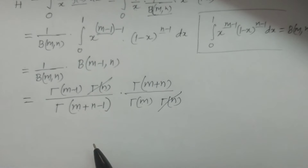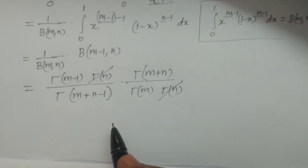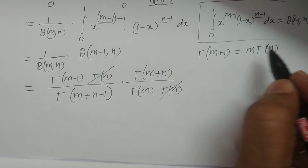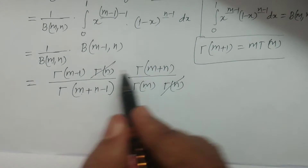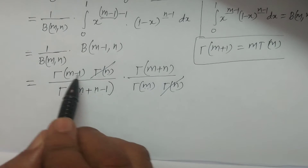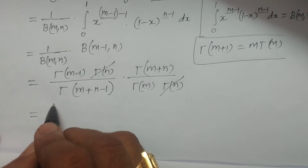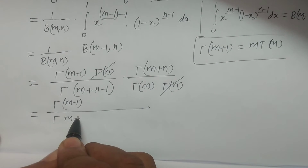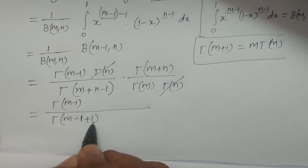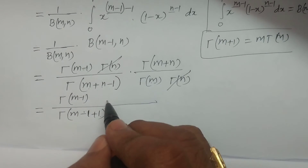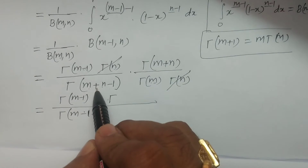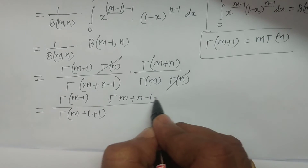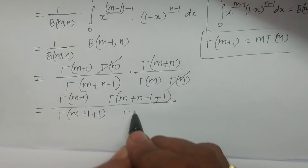We identify the highest factors and expand them using the formula gamma(m plus 1) equals m times gamma(m). Since m plus n is greater than m plus n minus 1, we add and subtract 1: write gamma(m plus n minus 1 plus 1) divided by gamma(m plus n minus 1). Similarly, gamma(m) can be written as gamma(m minus 1 plus 1), divided by gamma(m minus 1).